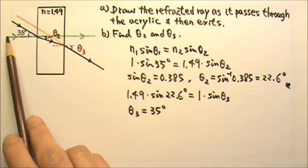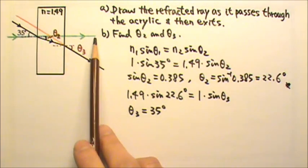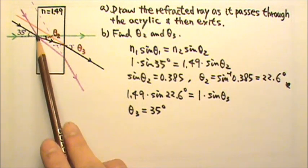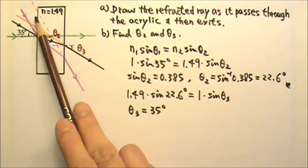Unless, of course, if we have normal incidence like this ray, then there is no shift. And the larger the angle of incidence, the larger the shift.